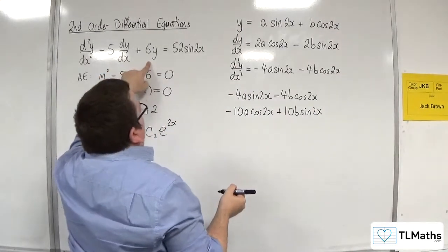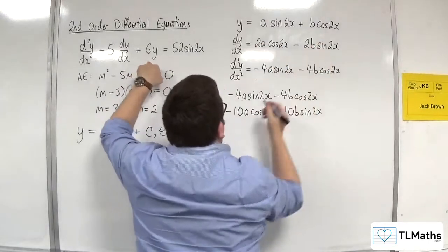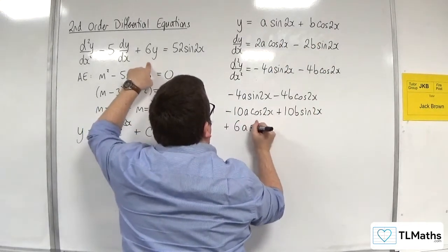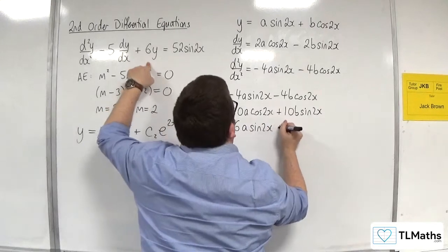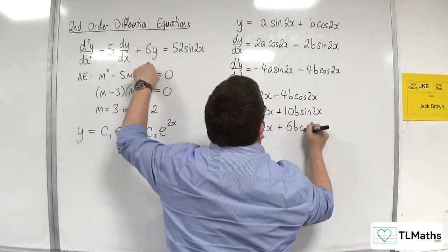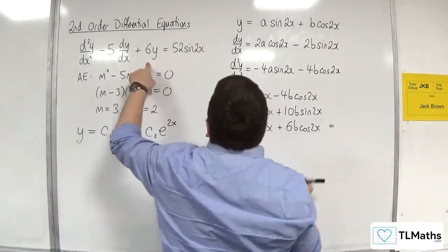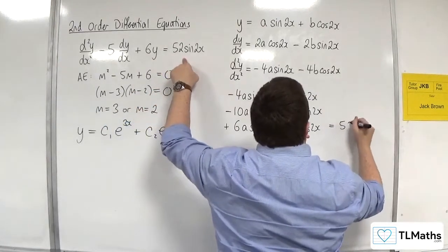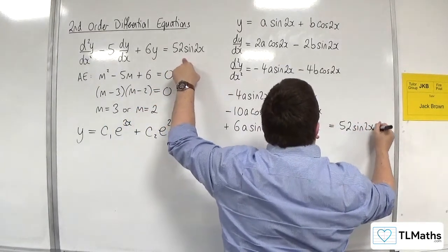Then we've got plus 6 lots of y. So, 6 lots of that. So, plus 6 lots of a sine of 2x. Plus 6 lots of b cosine of 2x. And the right-hand side is 52 sine of 2x.